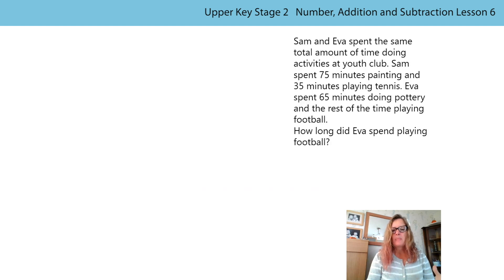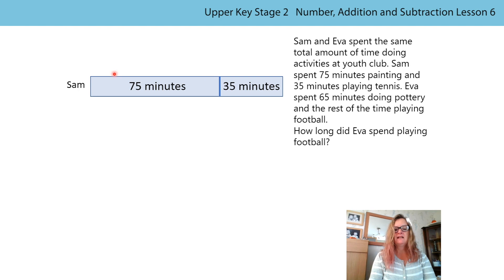Okay, but we could also have represented this in a bar model. So Sam's activities, he spent 75 minutes painting and 35 minutes playing football. So this is what his bar model would look like. We know Eva spent the same amount, so her bar model must be the same size. But what's different about her bar model? That's right, she only spent 65 minutes doing one activity. So this bar, this part of the bar is shorter than Sam's first part of the bar. It's 10 minutes shorter.